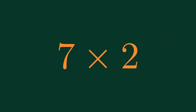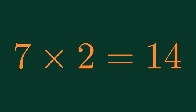What is 7 times 2? 7 times 2 is equal to 14.